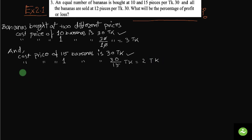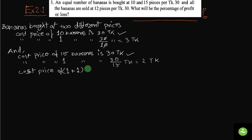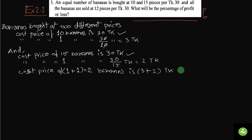So we have two cost prices. For one banana the price is 3 taka, and for another banana the price is 2 taka. So the cost price of 1 plus 1 banana — that is 2 bananas — is 3 plus 2 taka, which equals 5 taka.